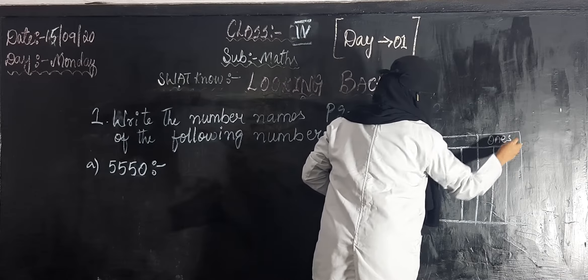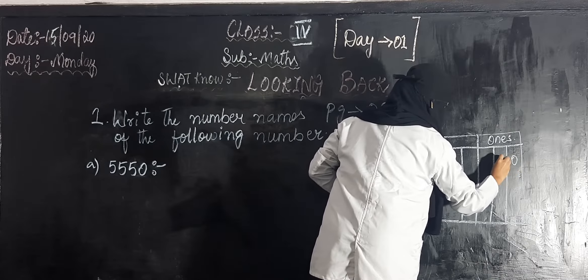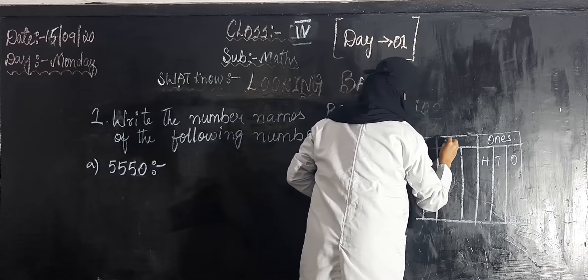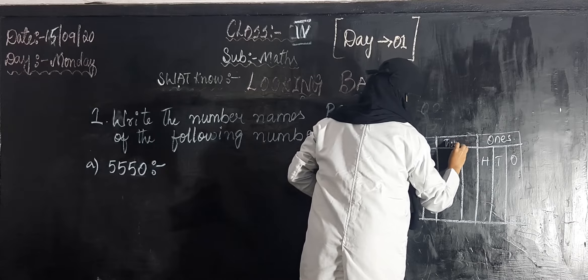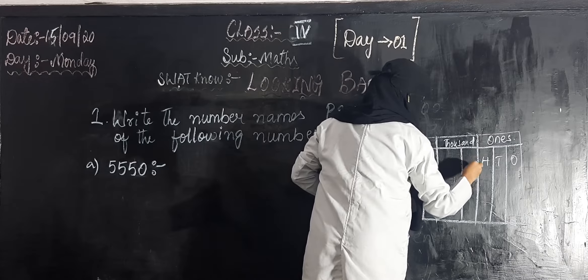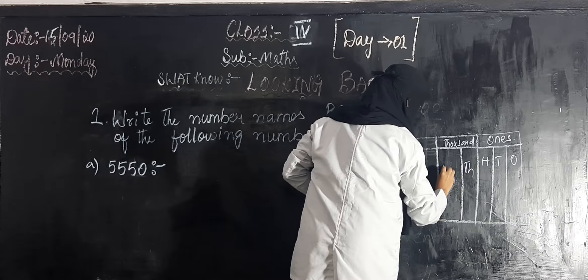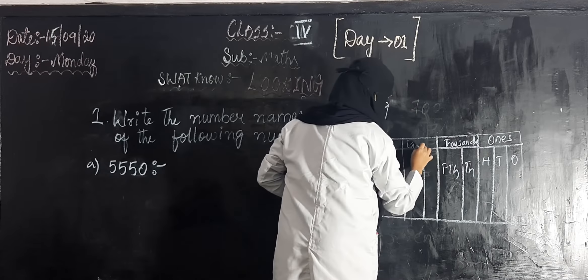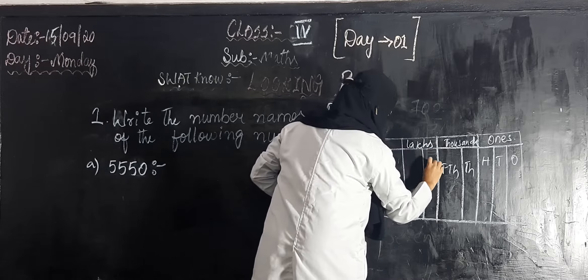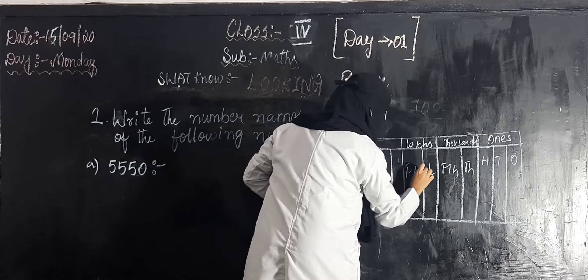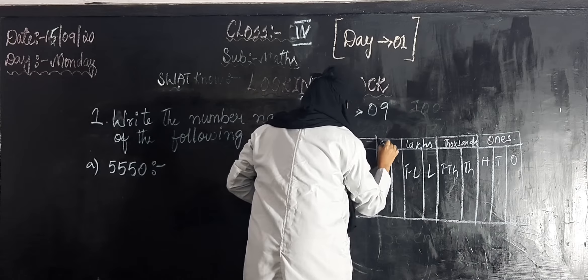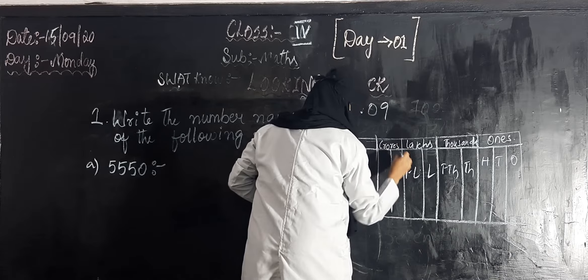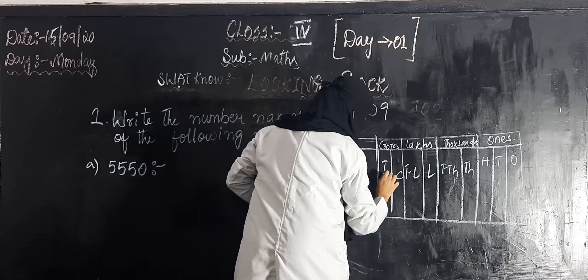So, first you have to remind the place value of Indian place value system. Have a look on this table. Once, tens, hundred, here thousand, ten thousand, lakhs, ten lakhs. Next, crore, crores, ten crores.